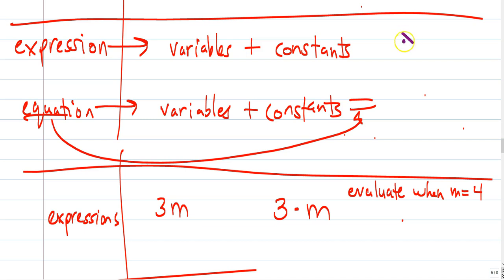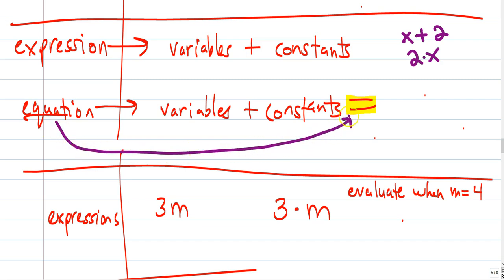That would be something like X plus 2. That would be something like 2X, because that's 2 times X, right? What's an equation? Well, it's a variable and a constant, but at the end, we get this equal sign. This equal sign makes it an equation. Equation literally has equa in front of it, as in the same root as equal.